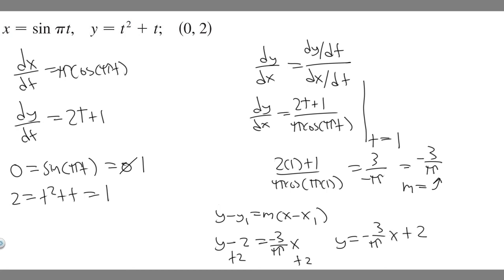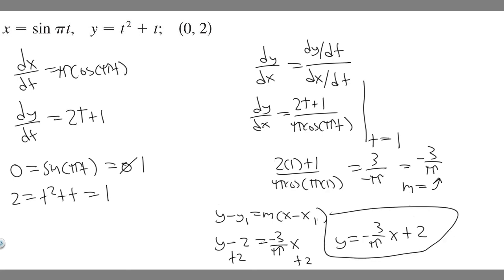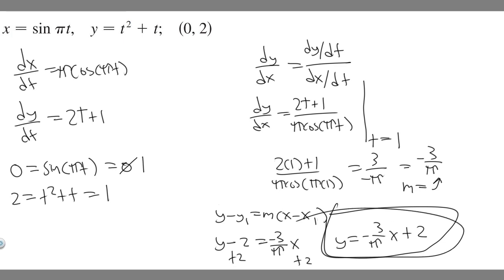So the equation of the tangent to the curve at that point is y = (−3/π)x + 2. Sorry — I had been saying 'minus 3 pi' instead of 'minus 3 over pi.' The correct answer is y = (−3/π)x + 2. Hopefully you found this useful.